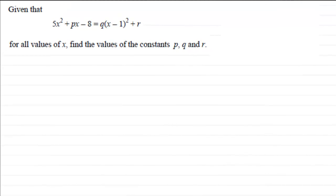Hi, now in this question we're given that 5x² + px - 8 is equal to q multiplied by (x - 1)² plus r, and it's valid for all values of x.